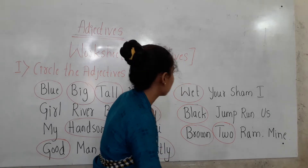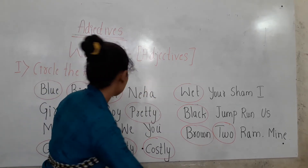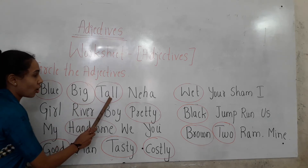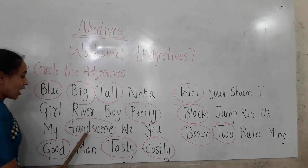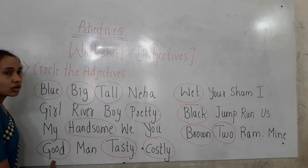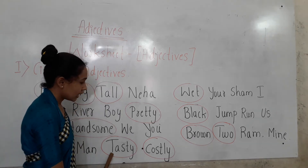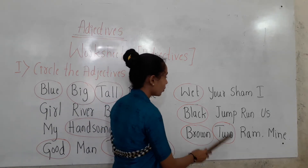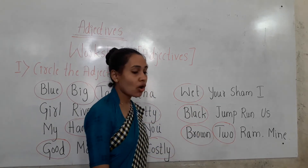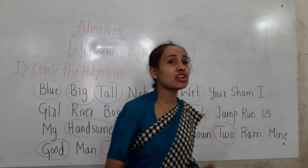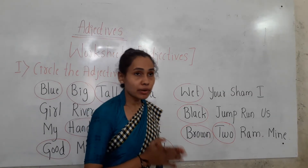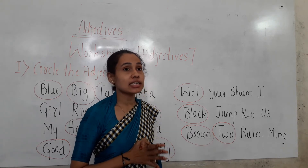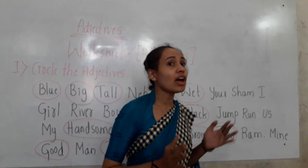Let us read once again: blue, big, tall, pretty, handsome, good — pay attention to the pronunciation children — tasty, costly, brown, two, black, wet. These are all adjectives which describe the number, shape, size, color, and quality of a noun.